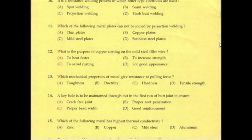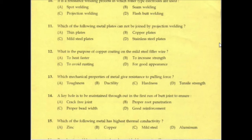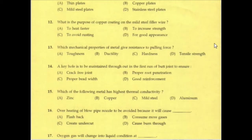Which of the following metal plates cannot be joined by projection welding? The answer is copper plates, because in projection welding — a resistance welding process — copper has very high thermal conductivity and electrical conductivity. The electrical resistance between copper plates is negligible, so no heat is generated between them, meaning copper plates cannot be welded by the projection welding method.